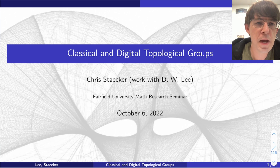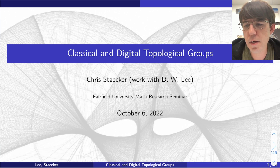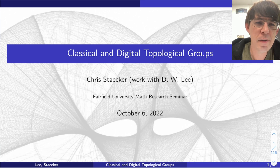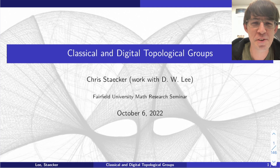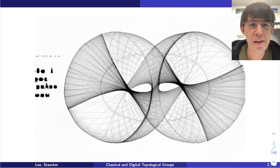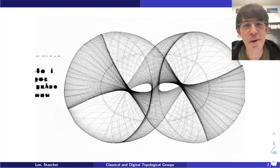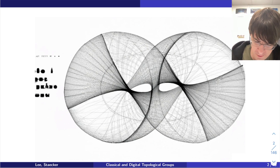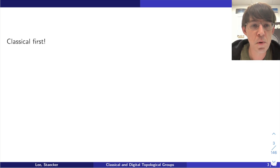The graphic in the background has nothing to do with anything. I made myself a free account for an AI art generator, and this is what you get if you type 'classical and digital topological groups' — it created that picture. I like the picture even though it doesn't really look like anything I'm going to be talking about. Anyway, classical and digital topological groups is what I want to talk about.